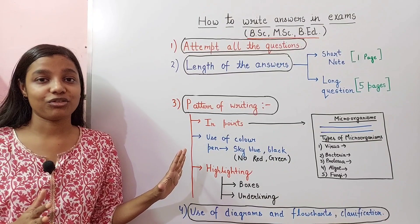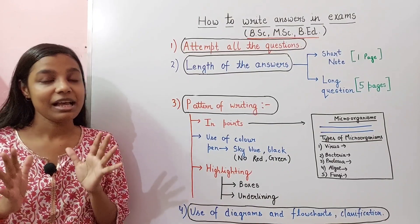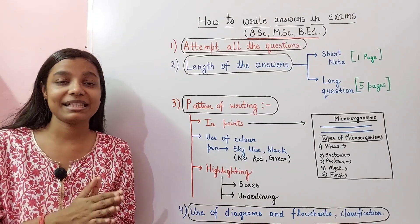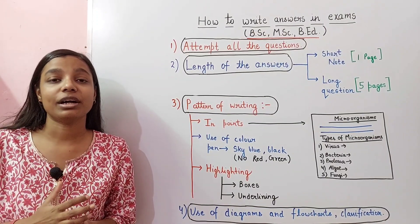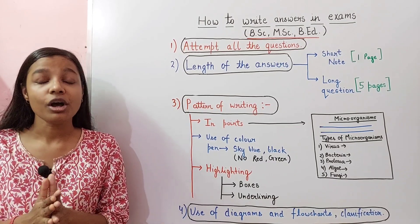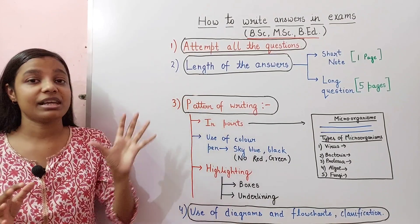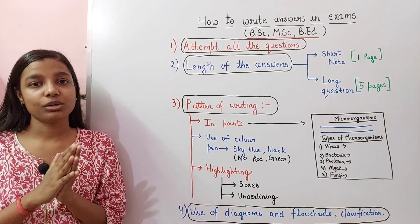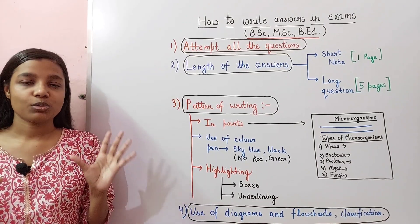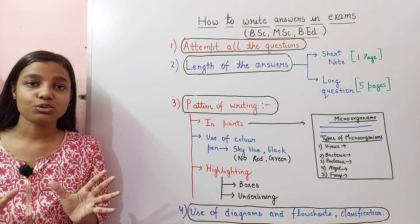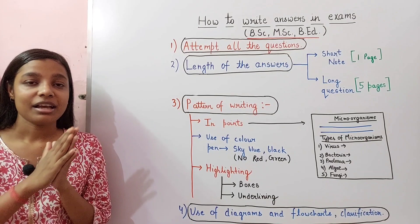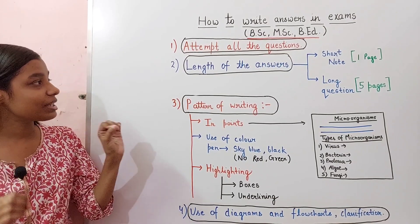Here we are having some important tips and tricks to help you fetch good marks. The first tip is to attempt all the portions. The paper at BSc and MSc level is very lengthy — you have to attempt compulsory questions and unit-wise questions. You should plan your time very well so that you can attempt all the questions.